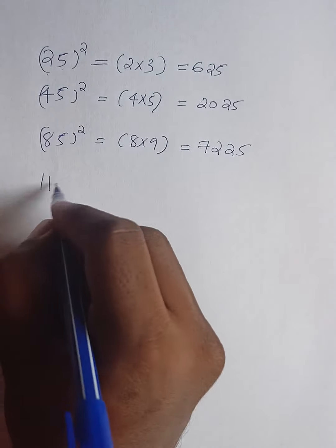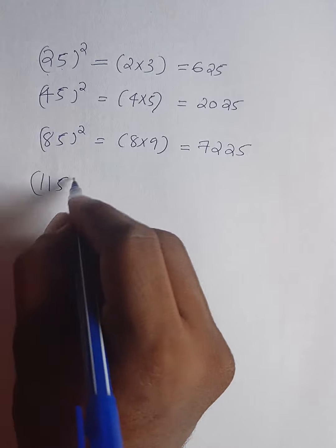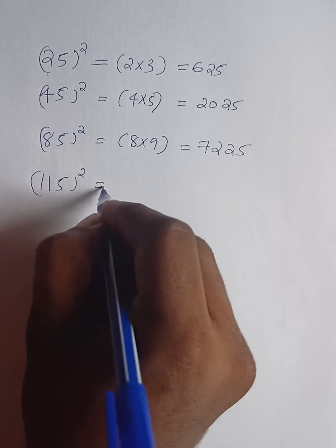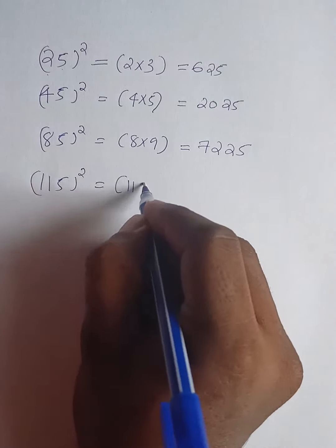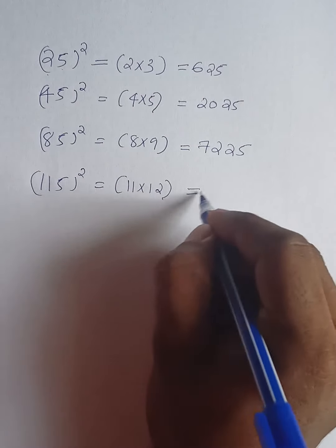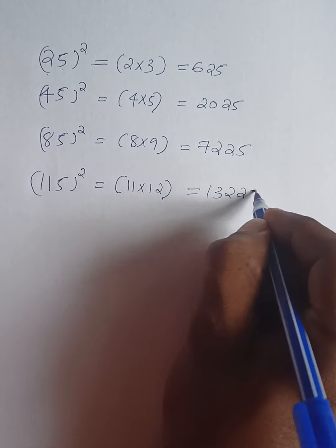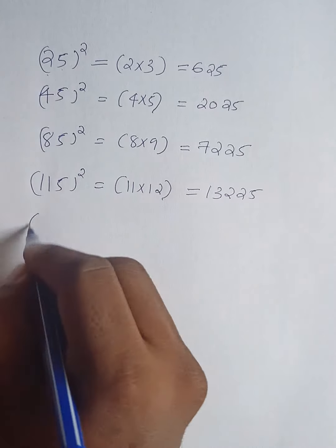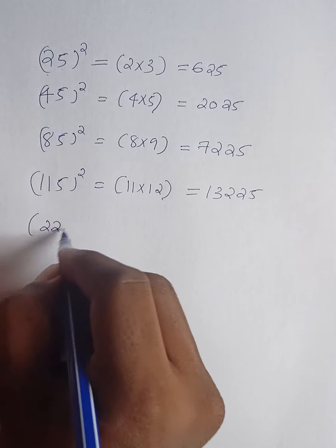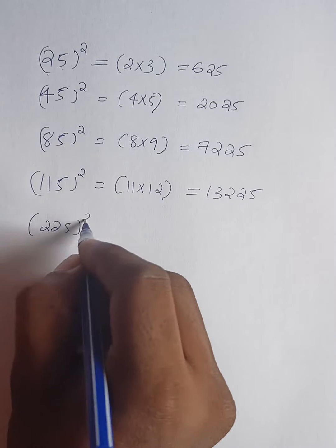5 all score. 11 x 12 — 132 is also 25. 225 is also 225.